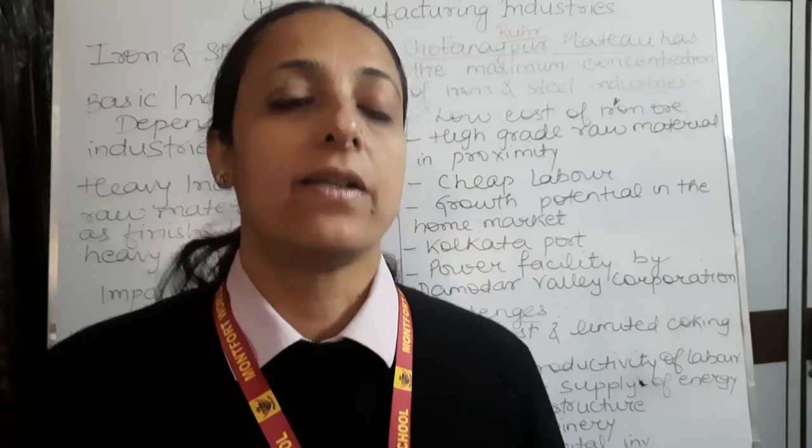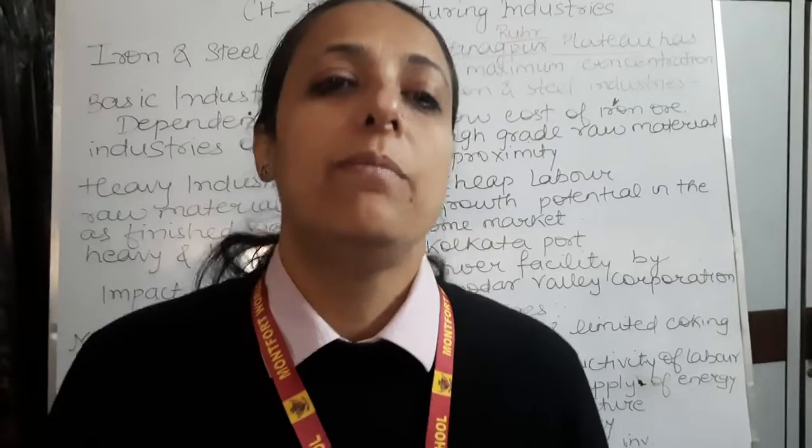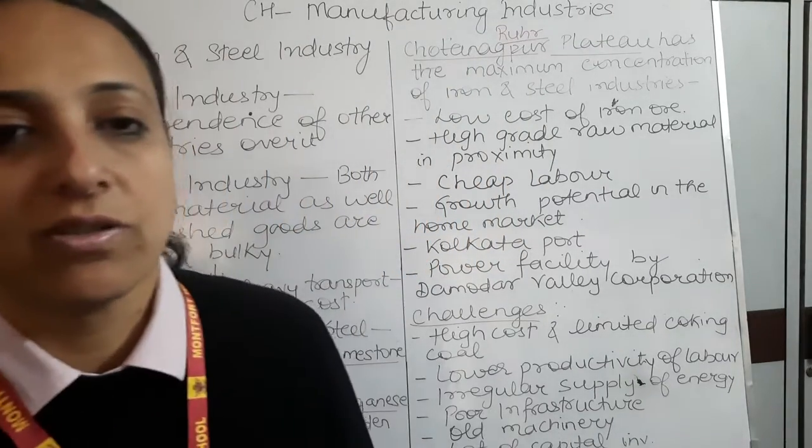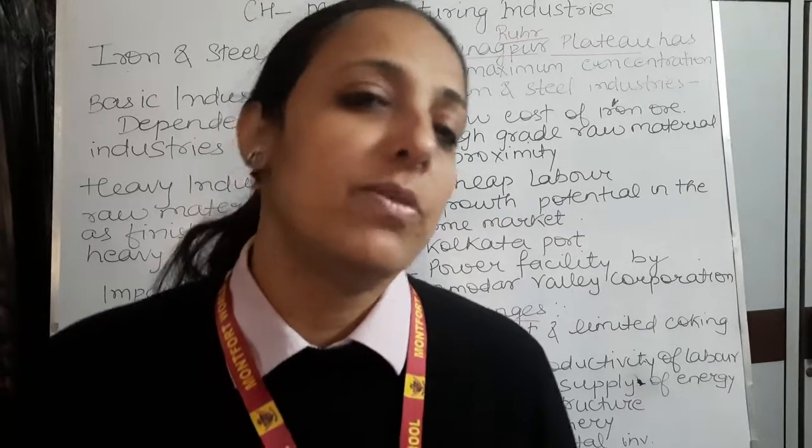Aluminium is extracted from bauxite. First, bauxite is processed in an aluminium refinery to obtain alumina. Then alumina is sent to the aluminium smelter where electricity is passed to obtain aluminium. The ratio given is 4 to 6 tons of bauxite yields 2 tons of alumina, from which 1 ton of aluminium is extracted. The key locational factors for this industry are assured power supply and availability of raw material at low cost.